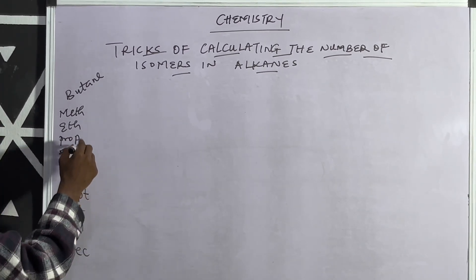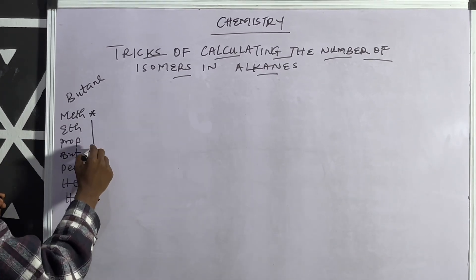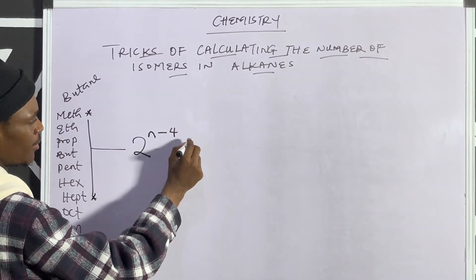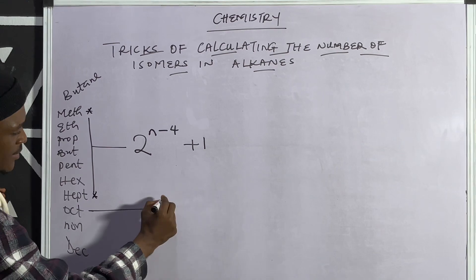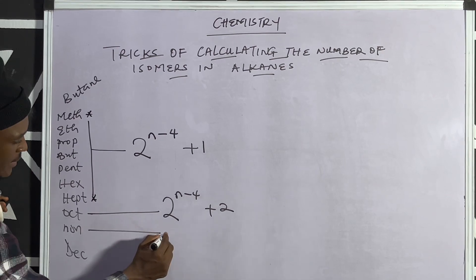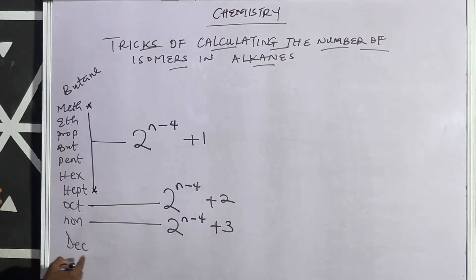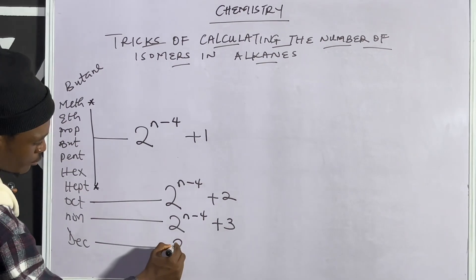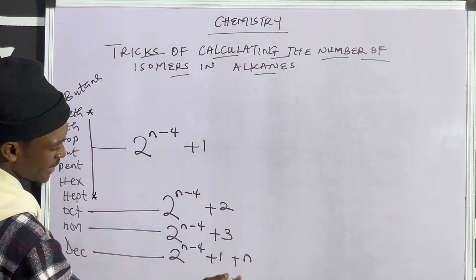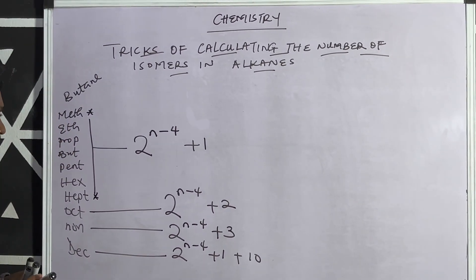From the first to the seventh member, the formula you can use is: 2 raised to the power of (n − 4) + 1. For the eighth member it is 2^(n−4) + 2. For the ninth member it is 2^(n−4) + 3. Therefore for the tenth member it is 2^(n−4) + 1 + n, where this n represents 10, so you can just substitute 10 directly.